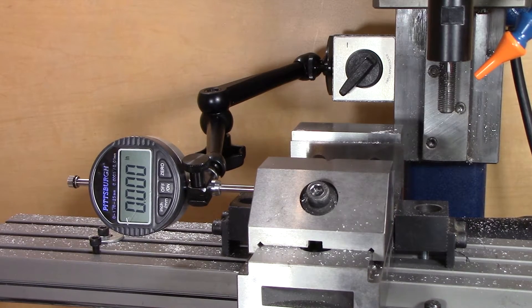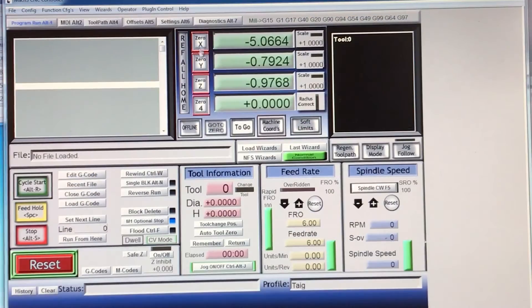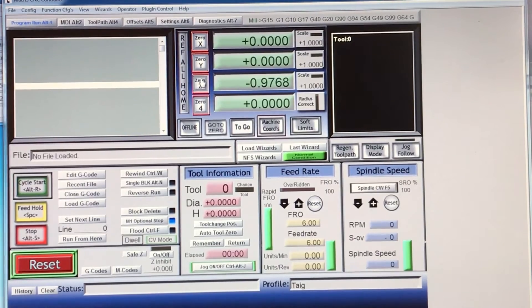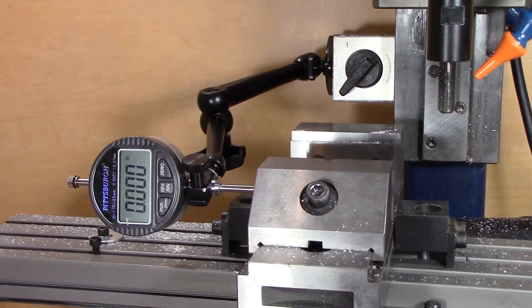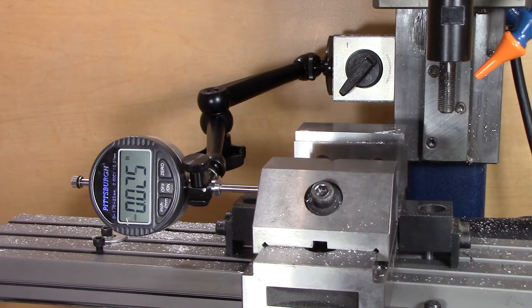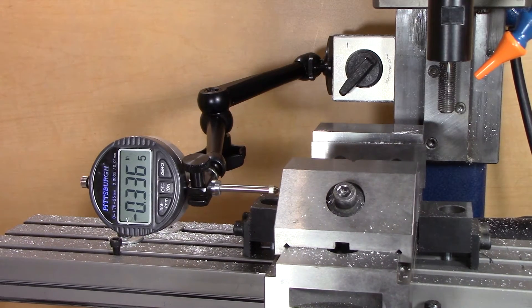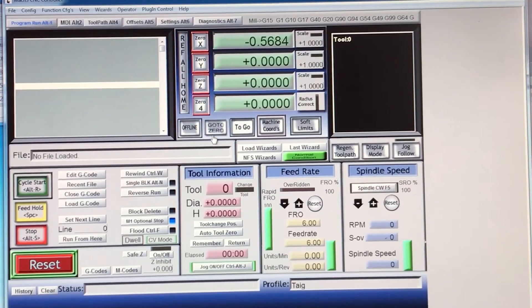Then I'm going to go to Mach 3 and set all of the DROs to zero. Once I've done that, I'm going to move back to the right, which is the direction I originally came from, and then press the go to zero button.